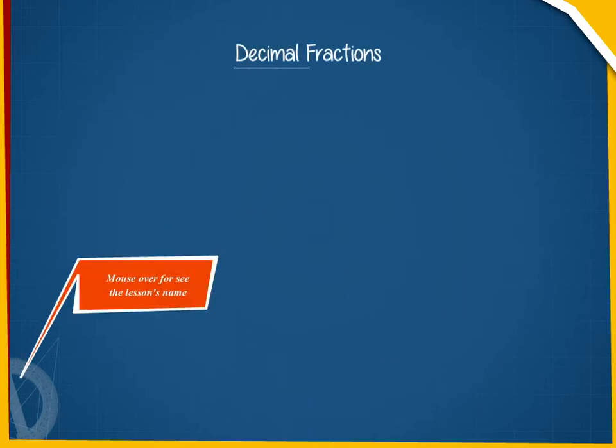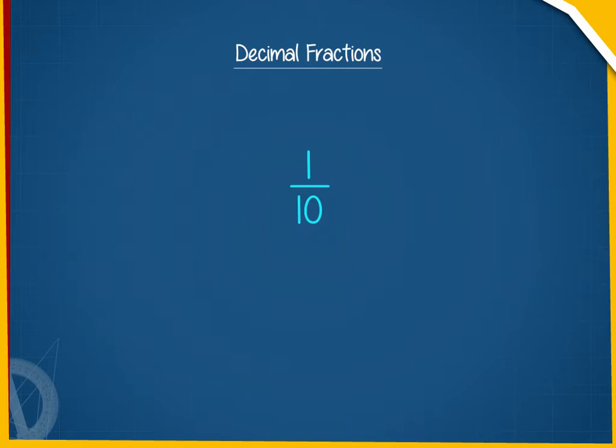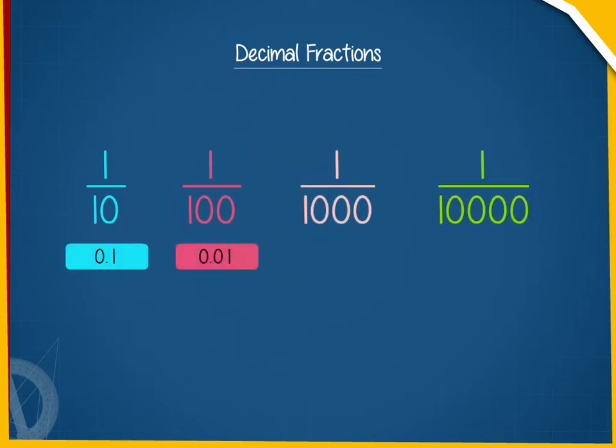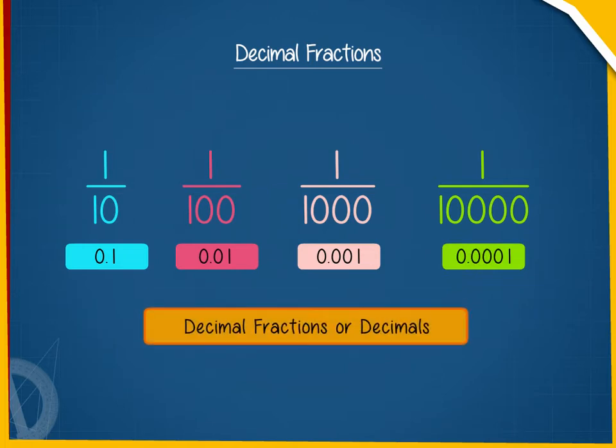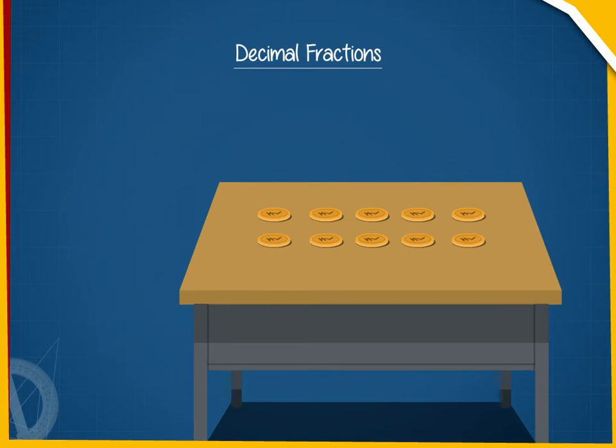Decimal fractions. Fractions with denominators 10 or multiples of 10, that is 100, 1000, or 10,000 etc., are called decimal fractions or simply decimals. We place 10 coins on the table and take out 1 from it.